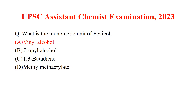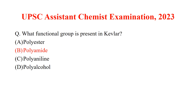What is the monomeric unit of PVA (heavy coal)? The answer is vinyl alcohol. Which functional group is present in Kevlar? The answer is polyamide — amide bonds will be present.